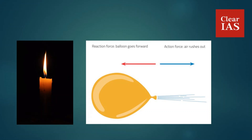Our scientists combined these two principles — the principle of combustion as seen in the candle example, and the principle of thrust and propulsion as in the case of the balloon — to make aircraft, satellite launch vehicles, and missiles. This is the very basic idea behind the working of aircraft, satellite launch vehicles, and missiles.